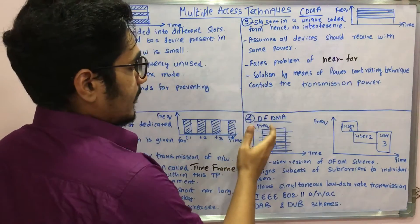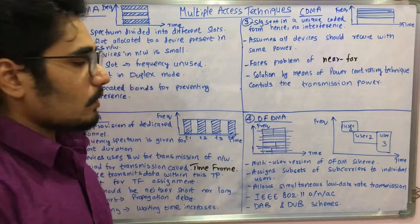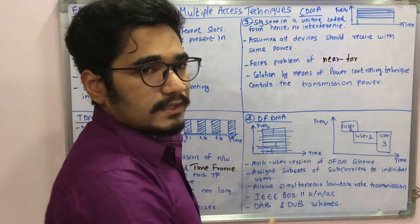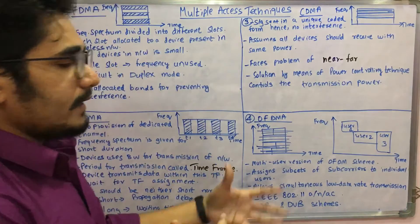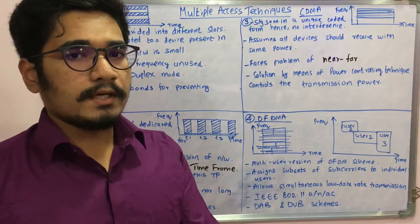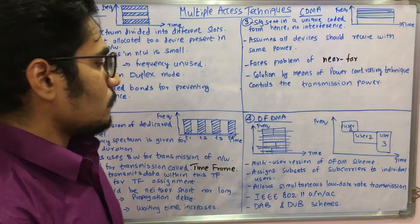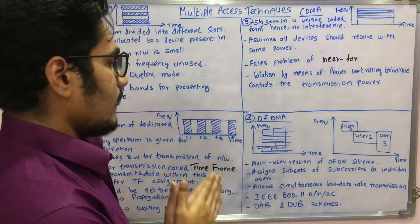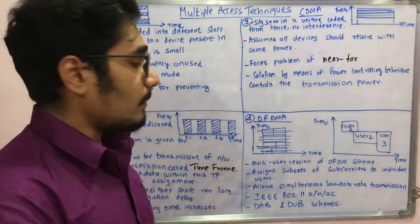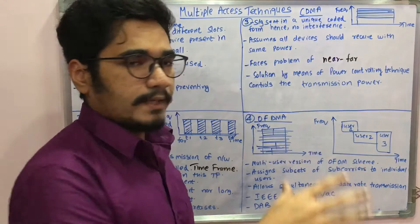At the right angles, the data is being given, and so n number of users can access the data at the same time without any kind of interferences or any kind of other jamming or signal.